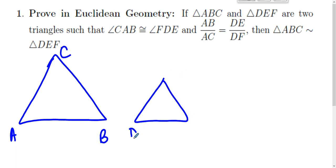Triangle DEF are two triangles such that angle CAB is congruent to angle FDE, and AB is to AC as DE is to DF. Then triangle ABC is similar to triangle DEF. This is Side-Angle-Side similarity because these two sides are proportional to these two sides and the angles between them are congruent.